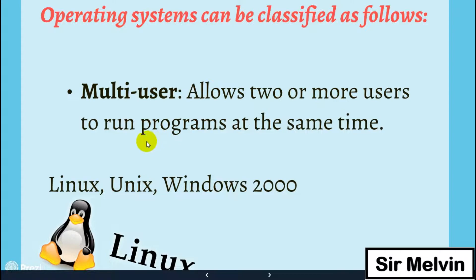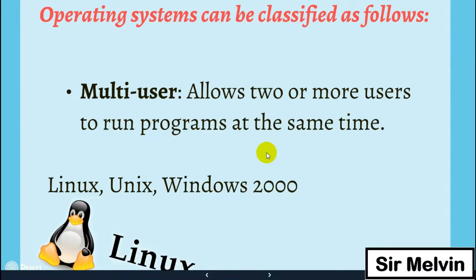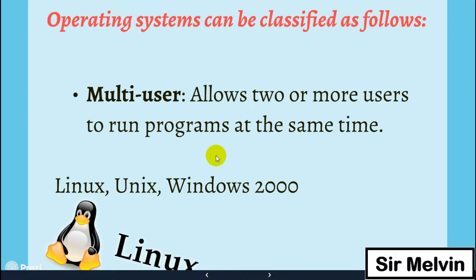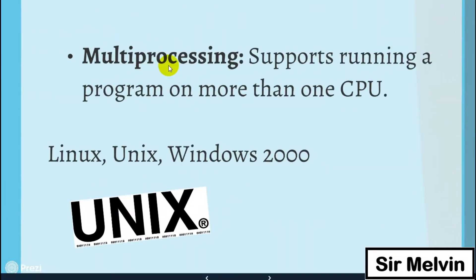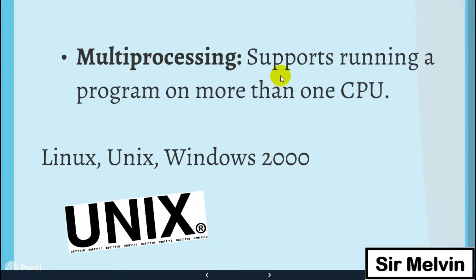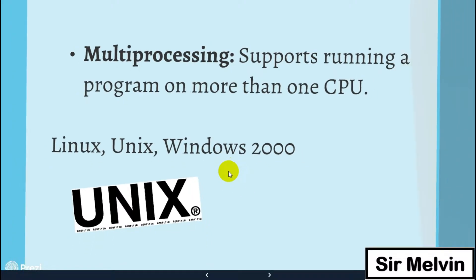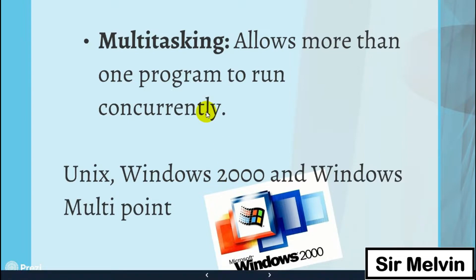The OS can be classified as follows. Number one: multi-user — it allows two or more users to run programs at the same time. Examples include Linux, Unix, Windows, and the latest Windows 11. Number two: multi-processing — the OS supports running a program on more than one CPU. Examples include Linux, Unix, and Windows.